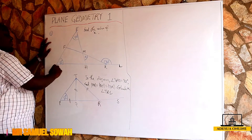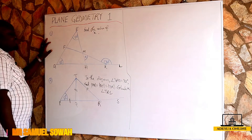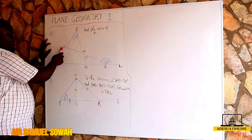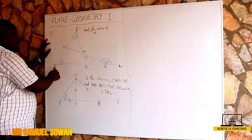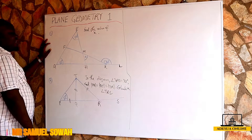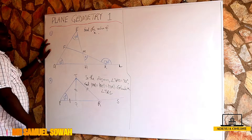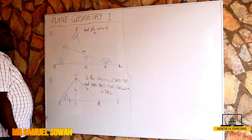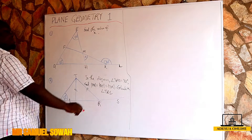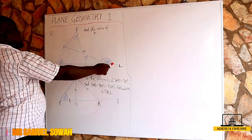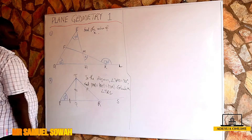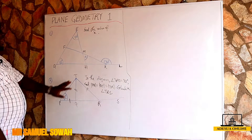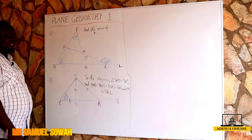In question one we have EFH being a triangle, FQK also being another triangle, and MHK being another triangle. The exterior angle MKL is equal to 130 degrees, and we are asked to solve for the value of X.